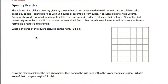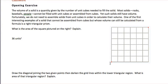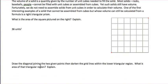We'll start by finding the area of the square pictured on the right. It's 6 units both ways, so our area is 36 square units. We did that by counting how long and how wide the square was, and then multiplying those units.